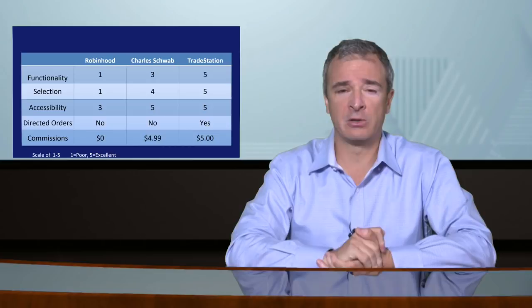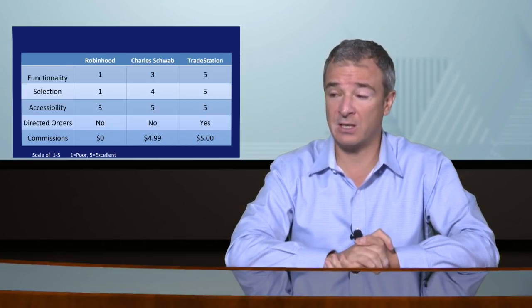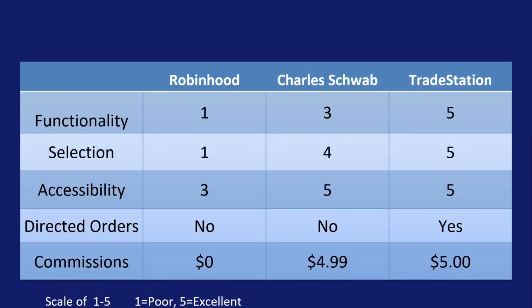Here's a comparison table — this is my personal opinion as a trader with 20 years of experience. On functionality, Robinhood is as bare-bones as it gets; Charles Schwab is much better; TradeStation is almost to a fault — so much functionality it can be confusing for beginners. On selection, Robinhood is a small pool; Schwab is much bigger; TradeStation is even larger, with access to markets around the world. On accessibility, I gave Robinhood a three — their phone app is clean and simple but there's no downloadable platform. Schwab and TradeStation both get fives — every way to access their platform is available.